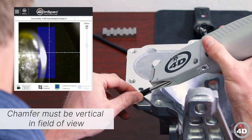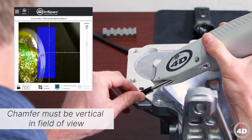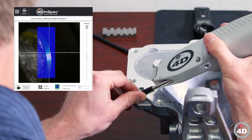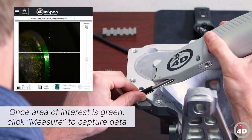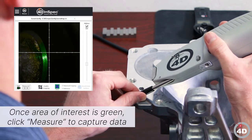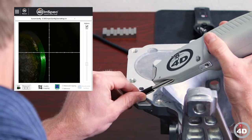I look at the live video and make sure the chamfer is vertical in the field of view. Once I get a green overlay on the area of interest, I will click that button away from auto brightness to get to the correct brightness level.